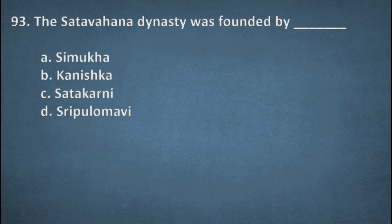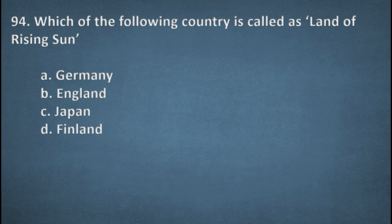Next one. The Satavahana dynasty was founded by options: Simukha, Kanishka, Satakarni, Sri Pulumavi. The right option, A, Simukha. Next one. Which of the following country is called as land of rising sun? Options: Germany, England, Japan, Finland. The right option, C, Japan.